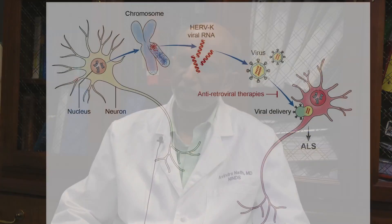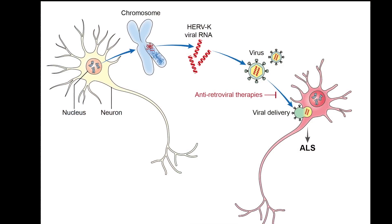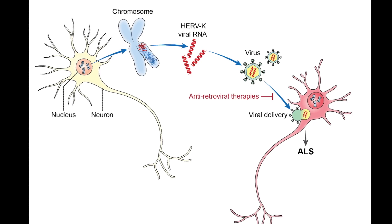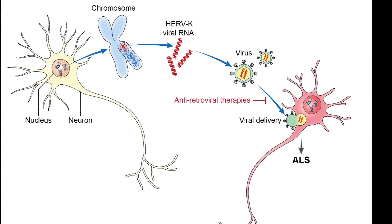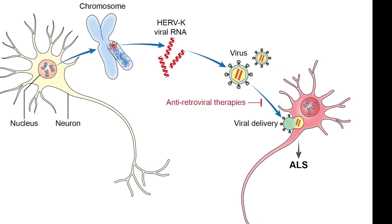ALS is a disease in which there is an anatomical progression of symptoms — it can start in one arm and then slowly progress to involve the other arm. It's quite possible that what the virus is doing is getting activated in one area and then gradually spreading from neuron to neuron.